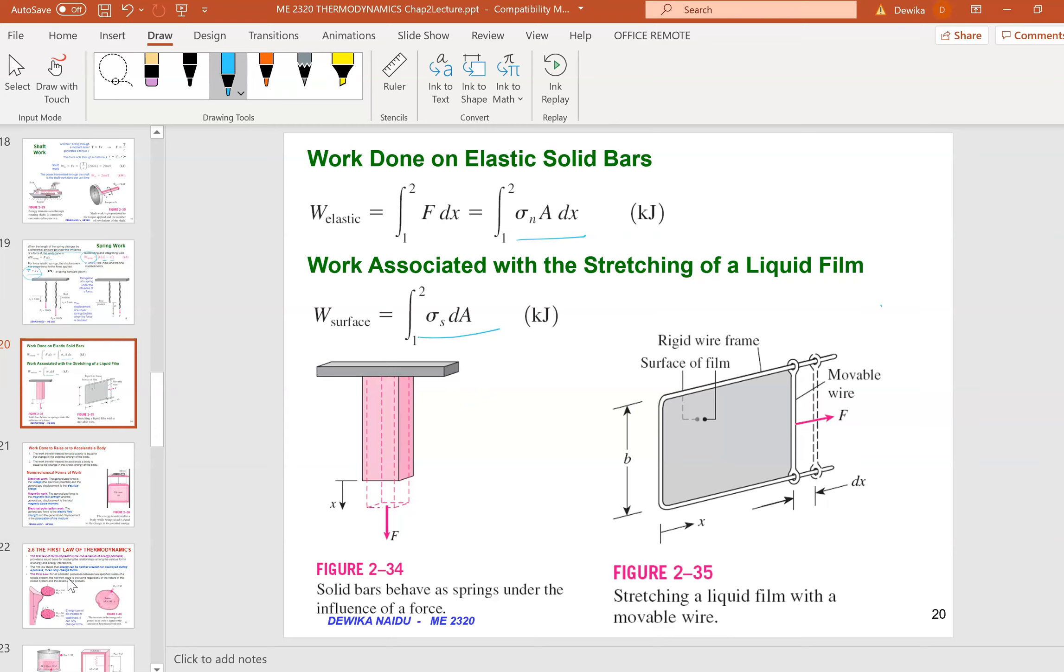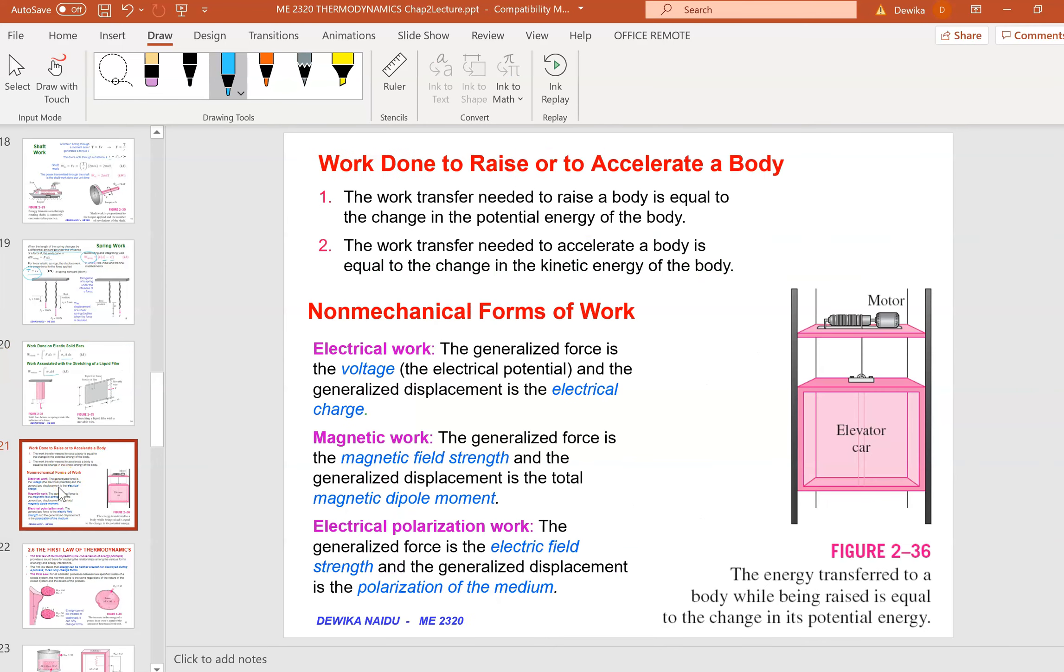To raise and accelerate a body: work transfer needed to raise the body equals the change in potential energy (mgh) of the body. Work transfer needed to accelerate the body equals the change in kinetic energy (½mv²).